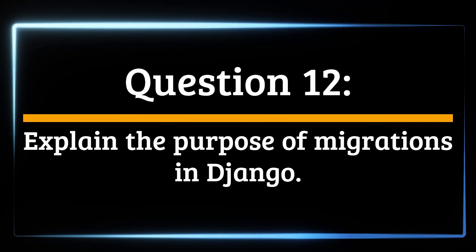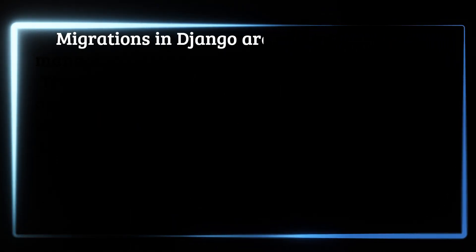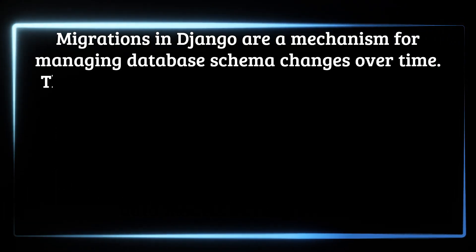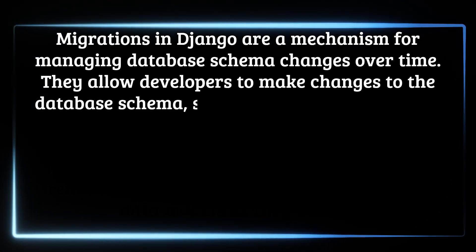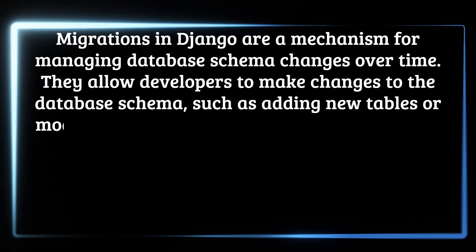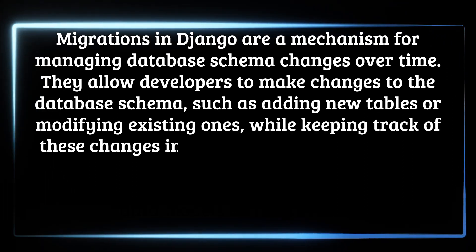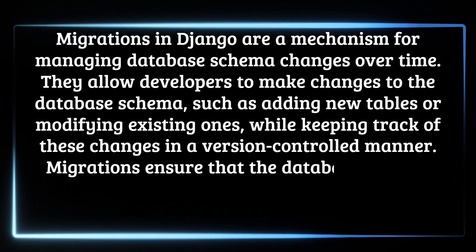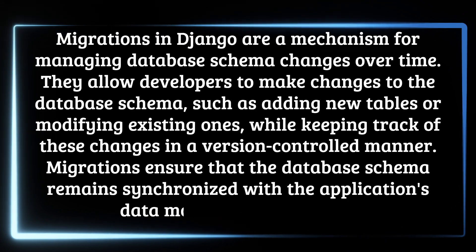Question 12: Explain the purpose of migrations in Django. Migrations in Django are a mechanism for managing database schema changes over time. They allow developers to make changes to the database schema, such as adding new tables or modifying existing ones, while keeping track of these changes in a version-controlled manner. Migrations ensure that the database schema remains synchronized with the application's data models as they evolve.